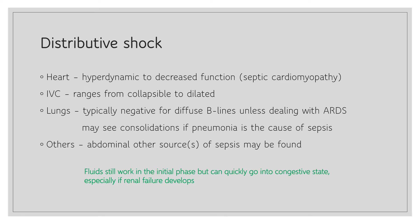You may see lobar consolidations or subpleural consolidations if pneumonia is the cause of sepsis. Limited scanning of the abdomen might reveal an intra-abdominal source of sepsis. In these patients, fluids still work in the initial phase, but they can quickly go into a congestive state, especially if the kidneys start to fail.